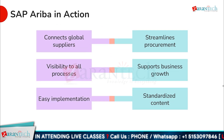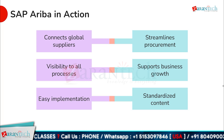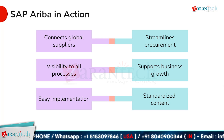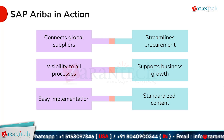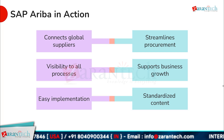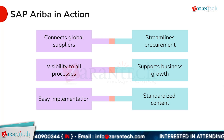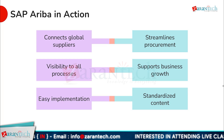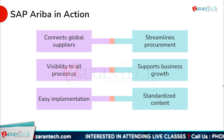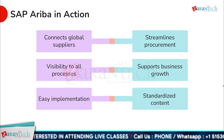SAP Ariba is a powerful tool that can transform business procurement processes. The platform connects global suppliers, giving businesses access to a vast network of potential partners. SAP Ariba streamlines procurement processes, automating tasks and reducing manual effort. The platform provides visibility into all procurement processes, enabling businesses to monitor and optimize their spending. SAP Ariba also supports business growth by providing a scalable and flexible procurement solution. The platform is easy to implement and offers standardized content, ensuring that businesses can get up and running smoothly.